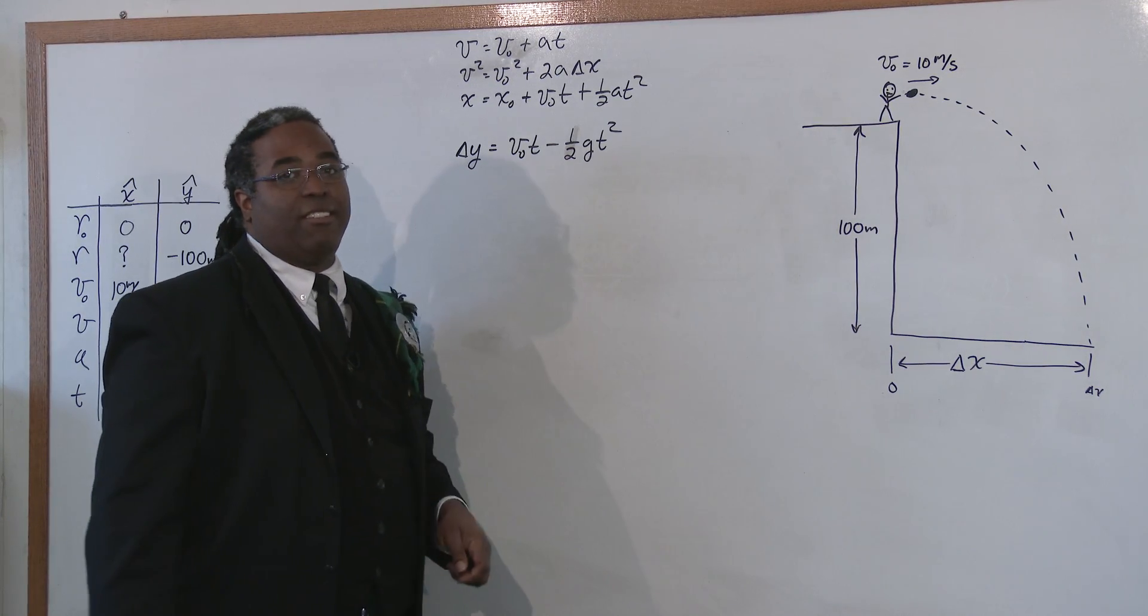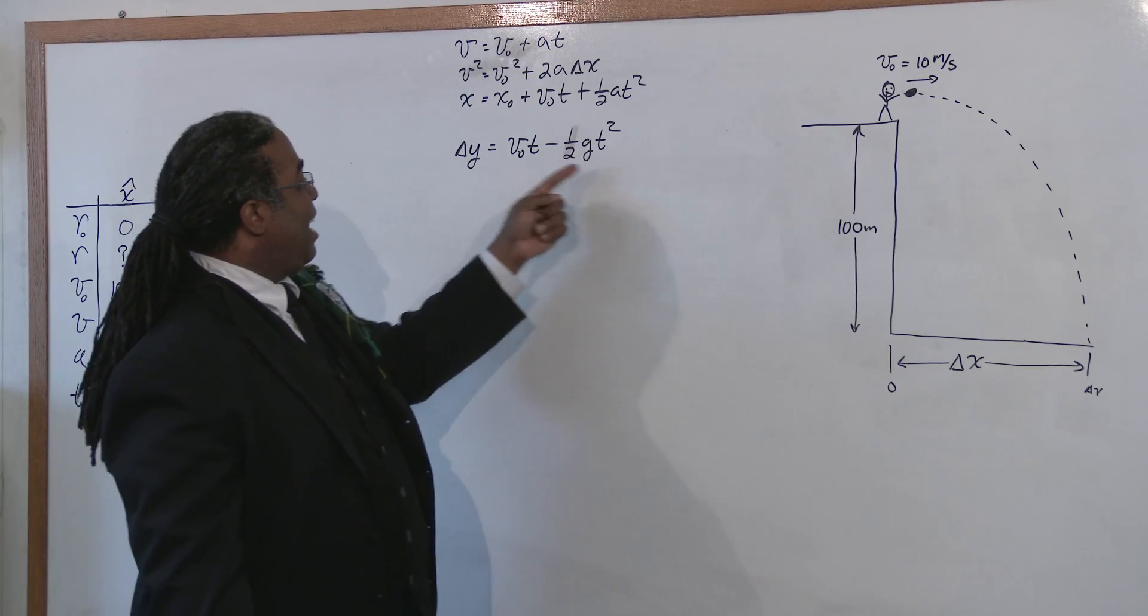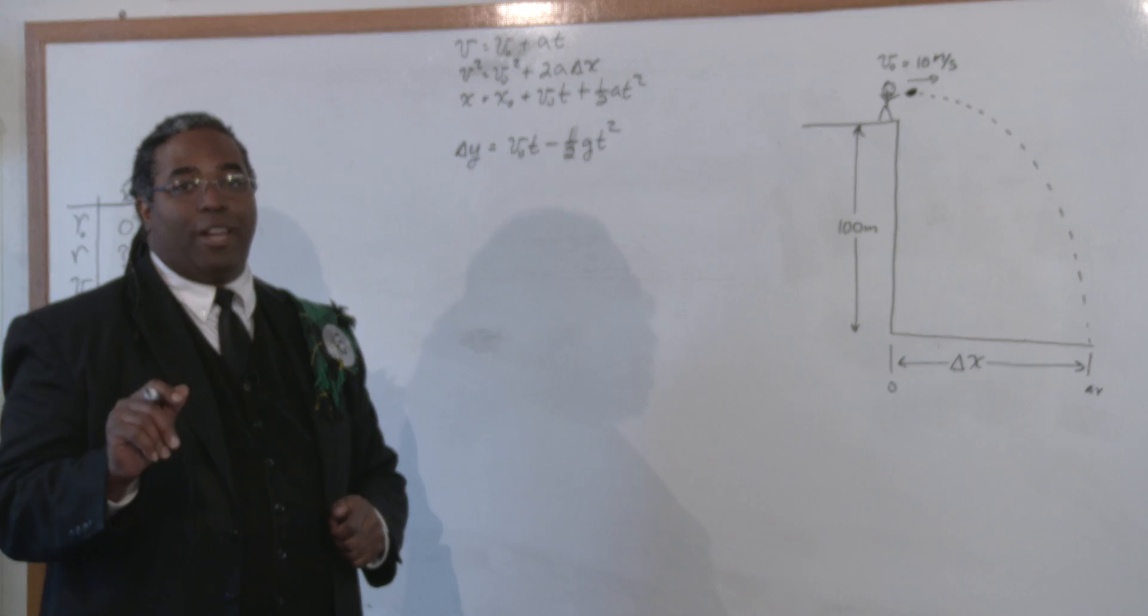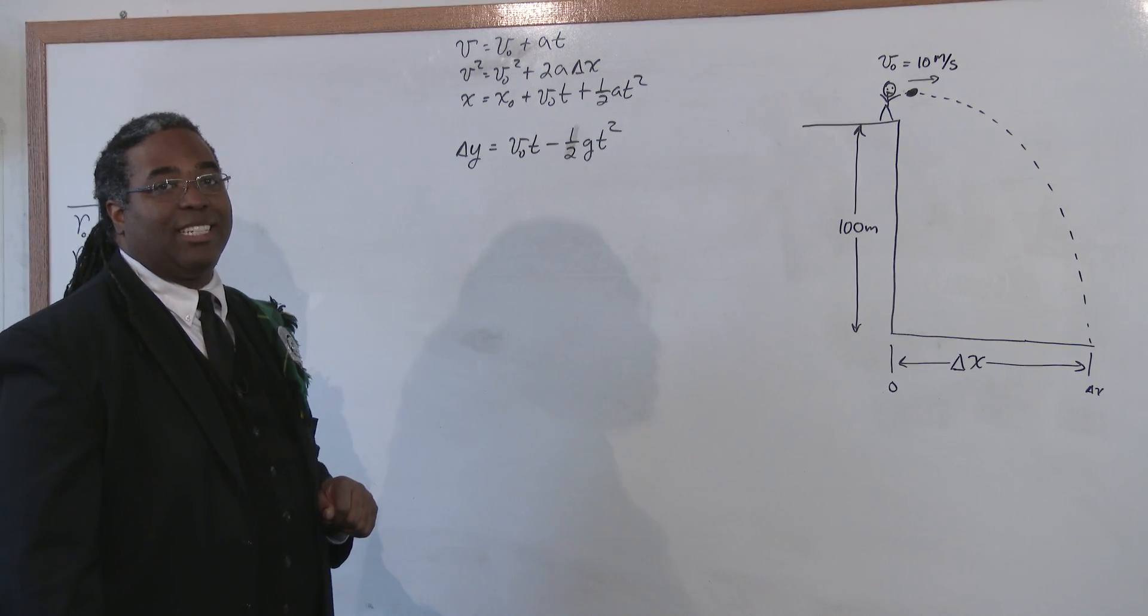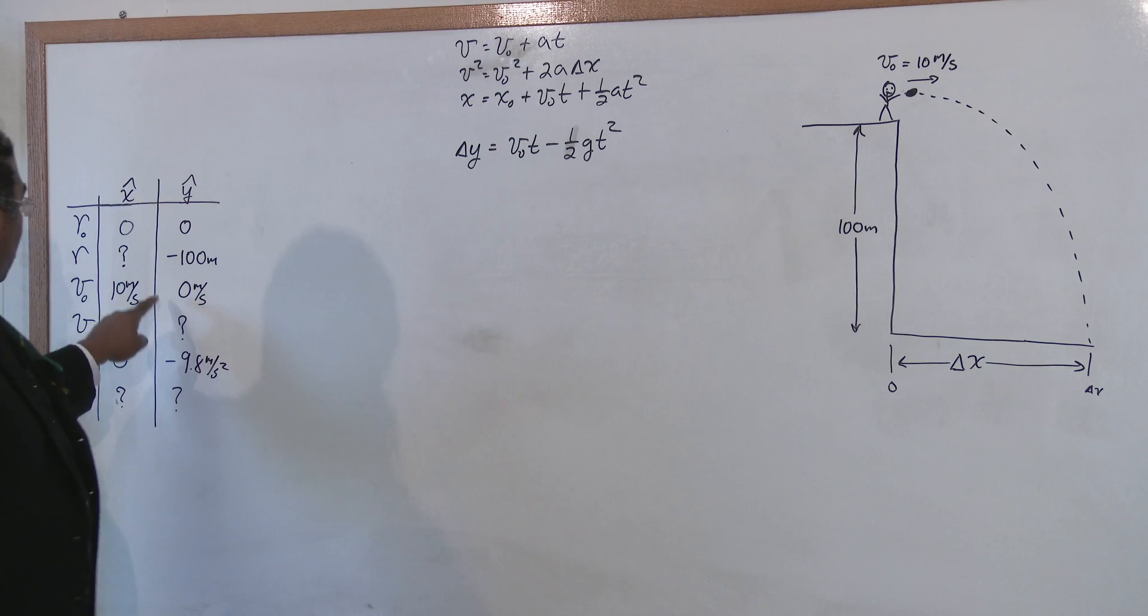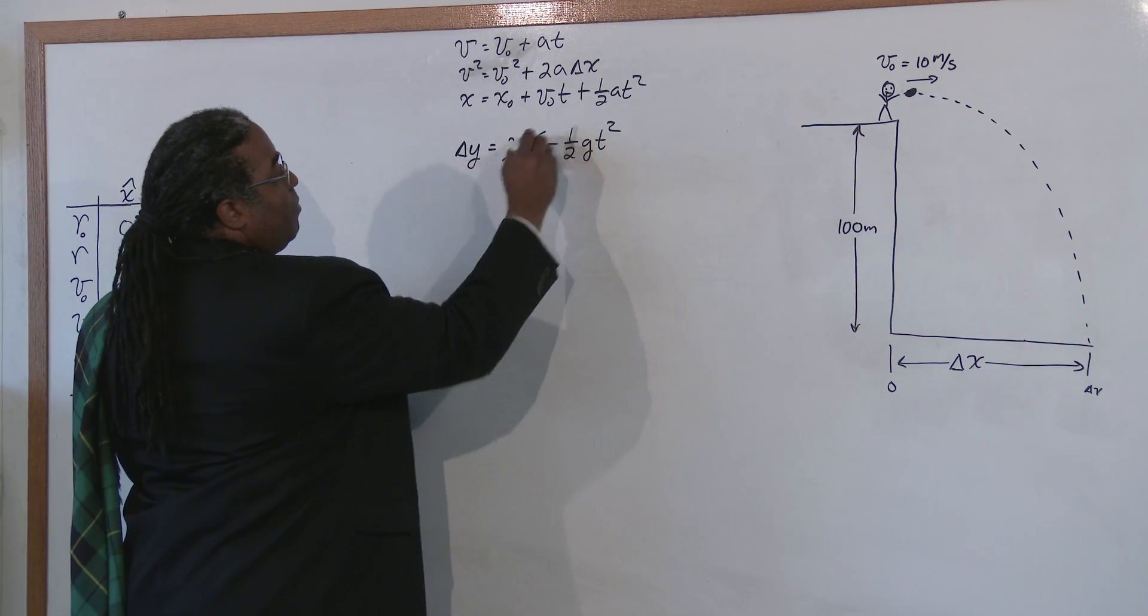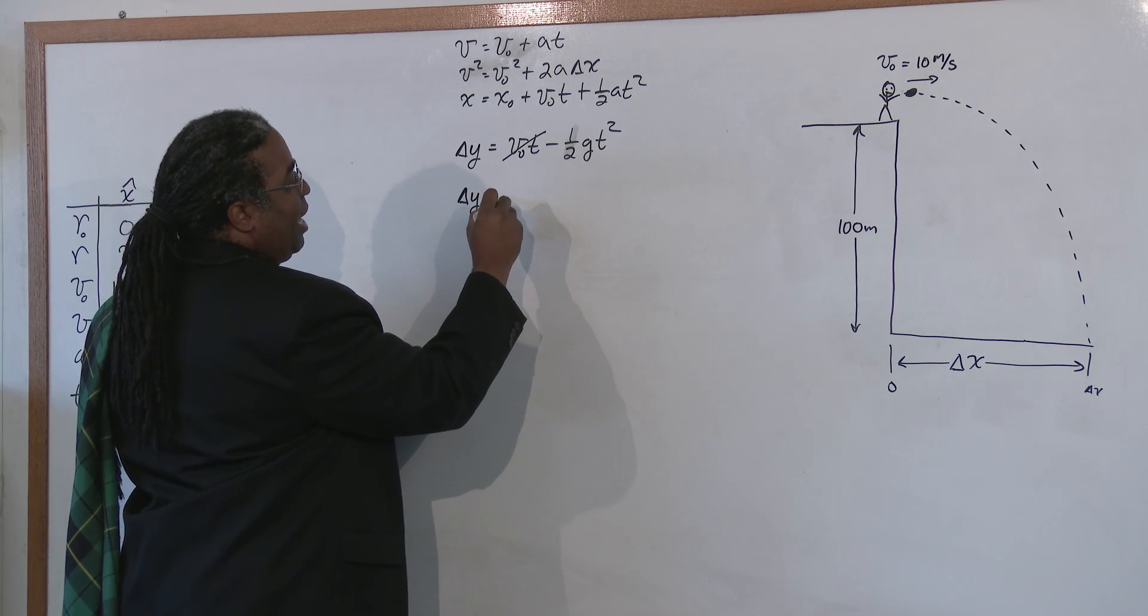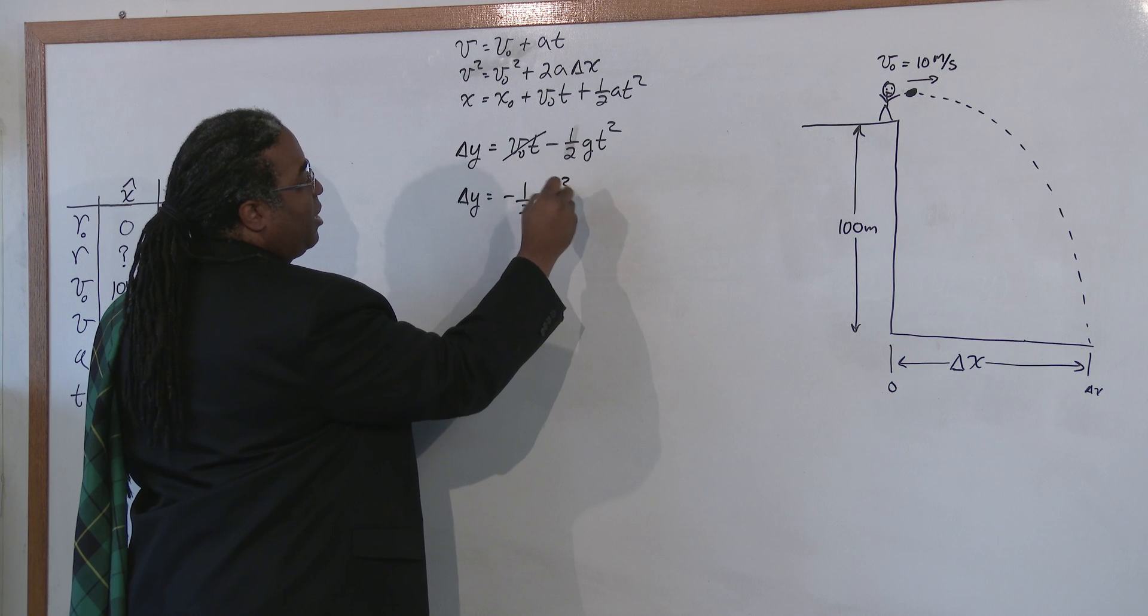Now, we need to solve for t and you're thinking, oh my gosh, I'm going to need a quadratic equation because I have, I can't factor out t from this, I need the quadratic. Guess what? You don't need the quadratic. Why? What was the initial velocity in the y direction? Oh wow, the initial velocity was zero. This term goes away. So now the change in position in the y is equal to one half, negative one half, g t squared.